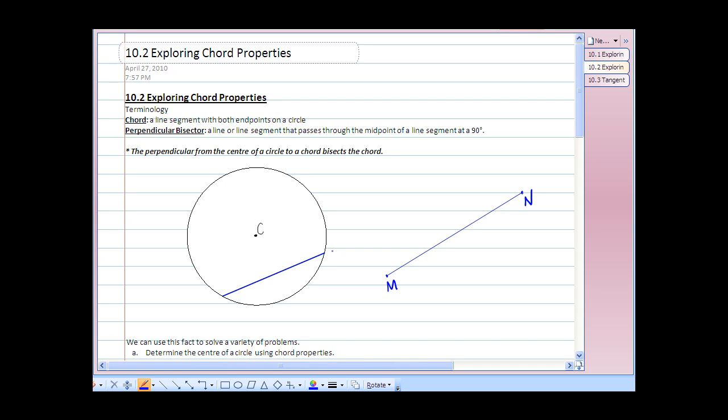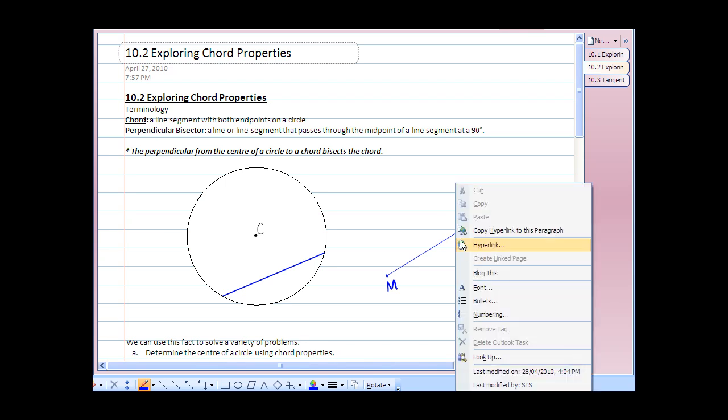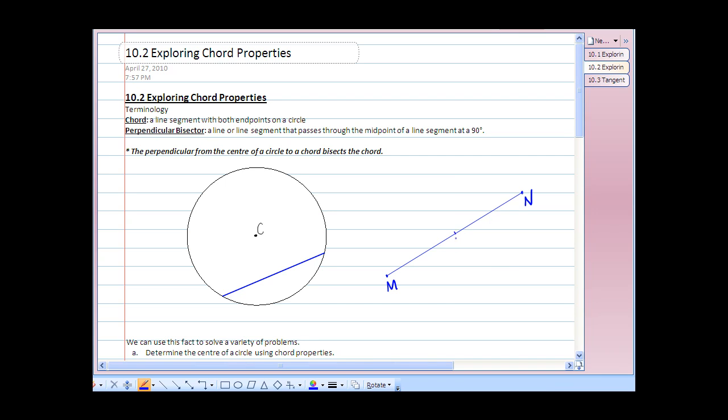So if we were to take a ruler and measure the distance of MN and determine the middle, and let's say that the middle is right here, and we'll call this point, point P.